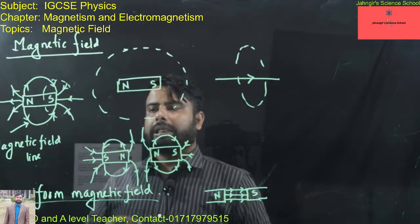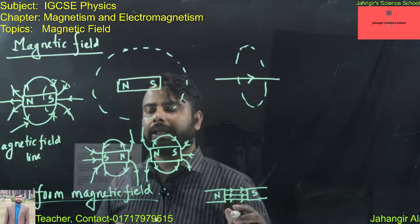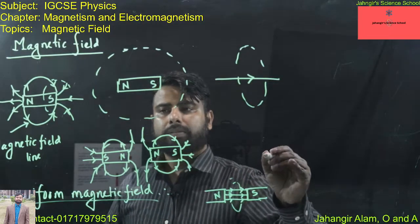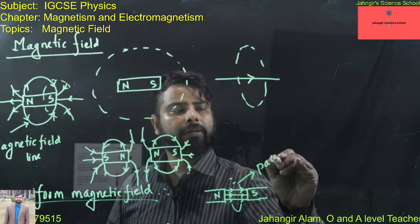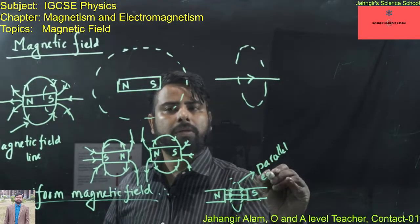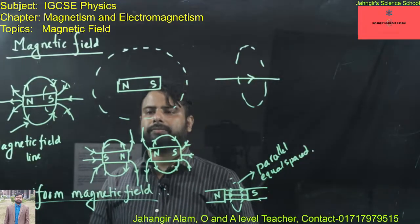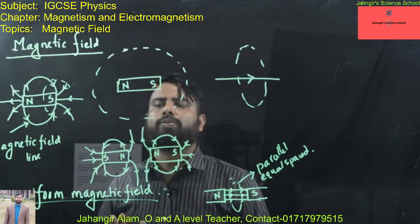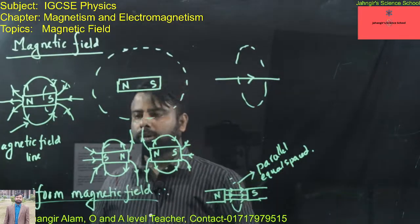A uniform magnetic field consists of parallel, equally spaced magnetic field lines. This type of field can almost be found between the North and South magnetic poles placed facing each other.